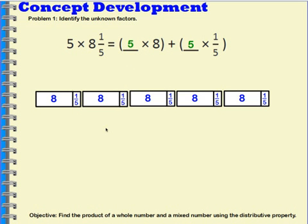So this is representing what we have on this side of the equal sign. Five copies of eight and one-fifth. But when we use the distributive property and we broke apart eight and one-fifth into eight plus one-fifth,